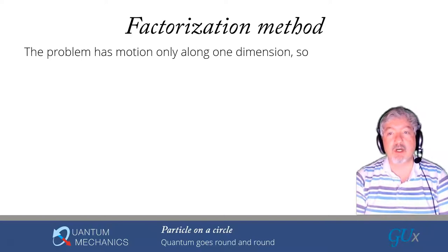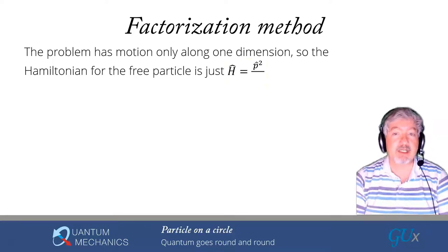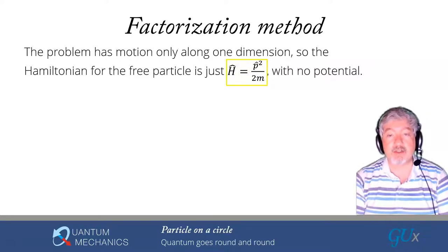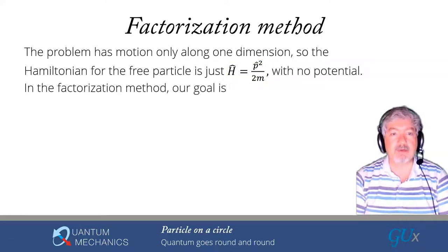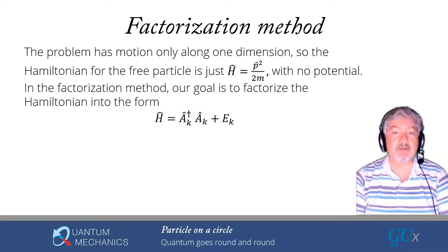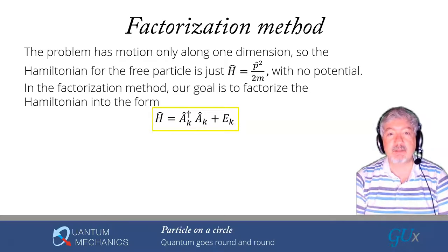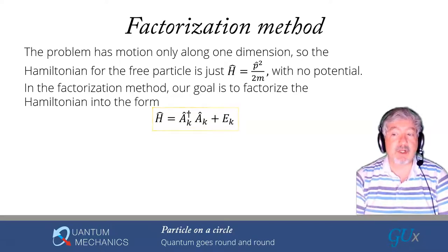The problem has motion only along one dimension, so the Hamiltonian for the free particle is just the kinetic energy: p squared over 2m. The momentum is only in one dimension — along the axial or tangential direction around the circle — and there's no potential in the problem. The factorization method has as its goal the factorization of the Hamiltonian into a form that looks like A-dagger A plus E. The A and A-dagger are non-Hermitian operators; A-dagger is the Hermitian conjugate of A, and E is a number. We often suppress the identity operator multiplying E because it's cumbersome to carry around.